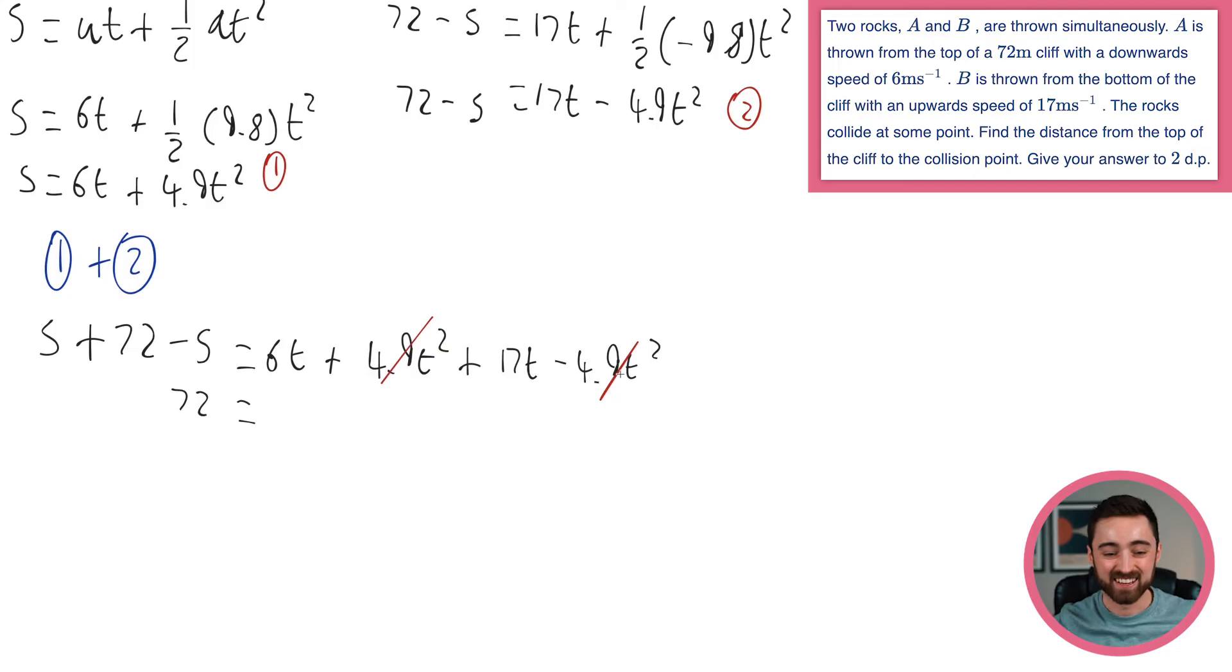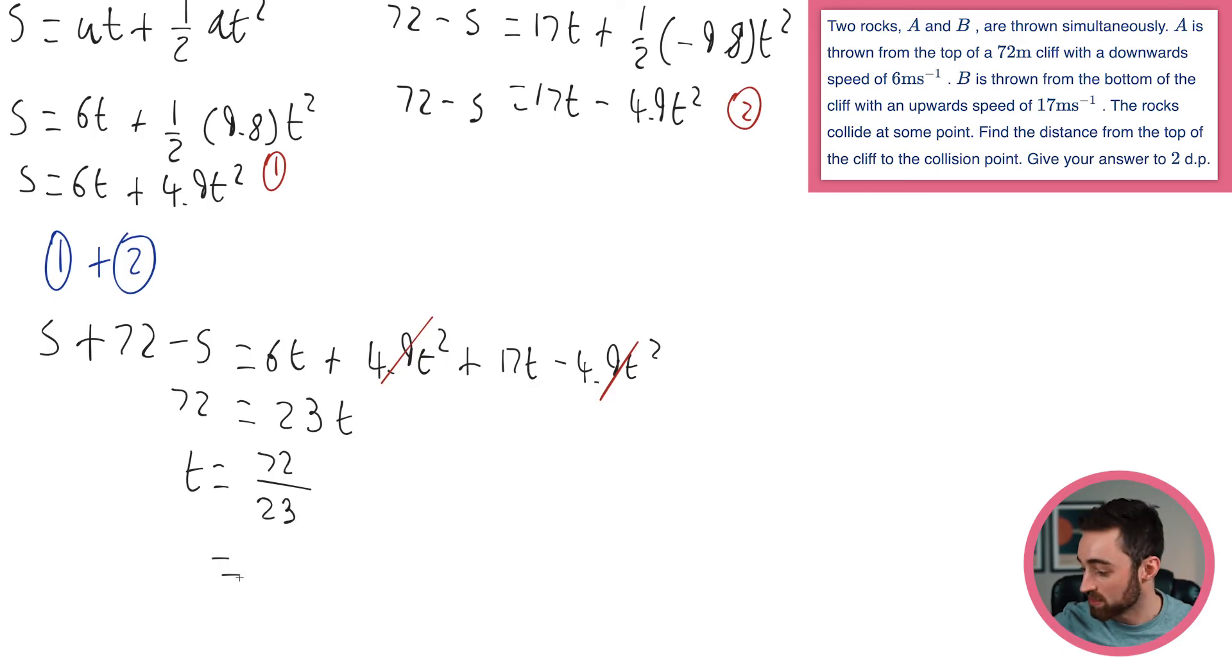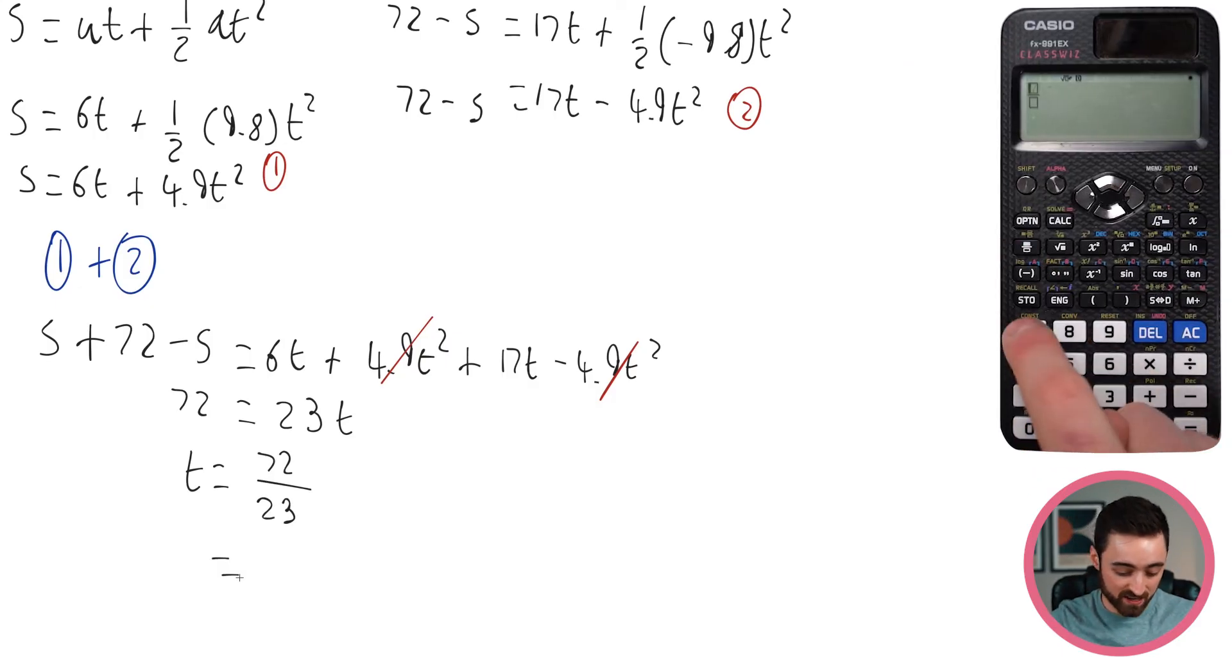It's not too bad, is it? So now I'm just left with 6T plus 17T, which is going to be what? 23T. Divide by the 23. What I'm going to get? T is 72 over 23, which is going to be, see if this simplifies nicely at all, is 72 over 23. Let's keep it as a fraction.